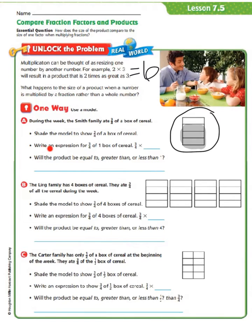Now our next step is to write an expression for 3 fourths of 1 box of cereal: 3 fourths times 1, or written with the whole number over 1. Will the product be equal to, greater than, or less than 1? Anytime you're multiplying by a fraction, we know the product will be less than 1.